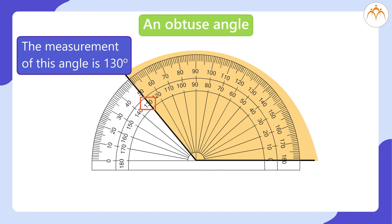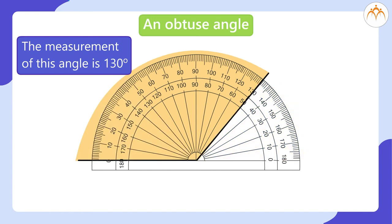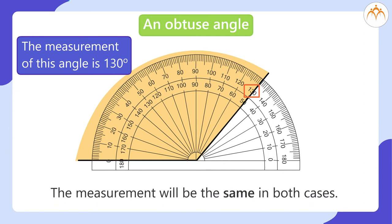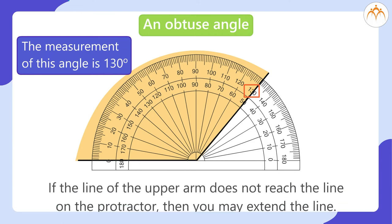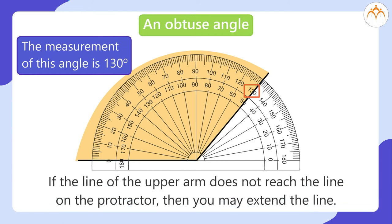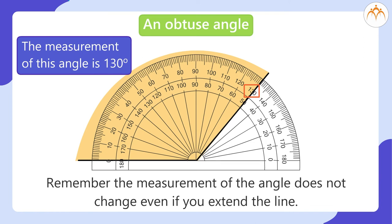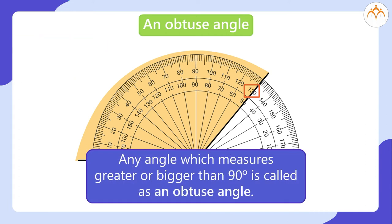If the same angle is open from the left side, then you can read the measurement from the left side of the midline of the protractor. The measurement will be the same in both cases. If the line of the upper arm does not reach the line on the protractor, then you may extend the line. Remember, the measurement of the angle does not change even if you extend the line. Any angle which measures greater than 90 degrees is called an obtuse angle.